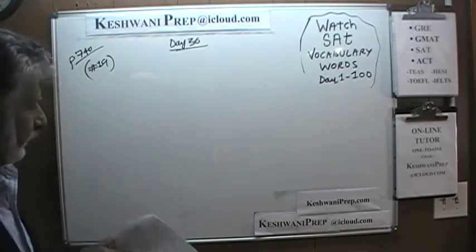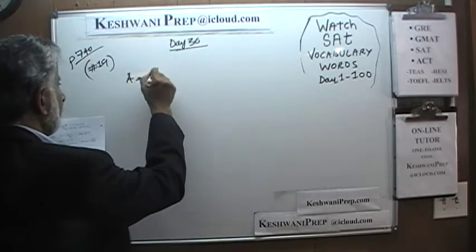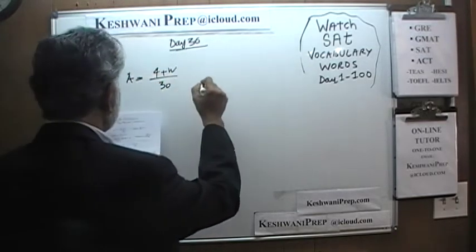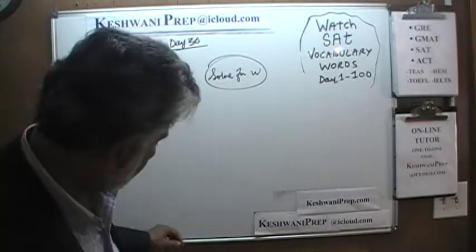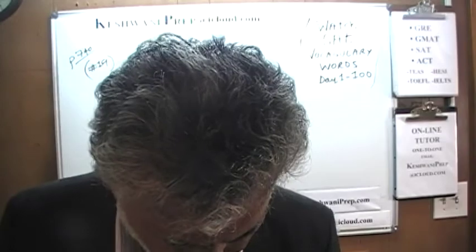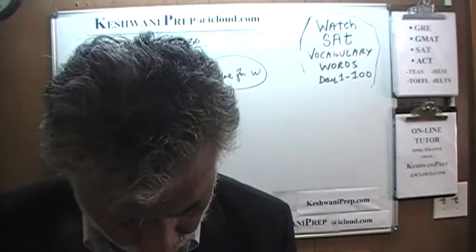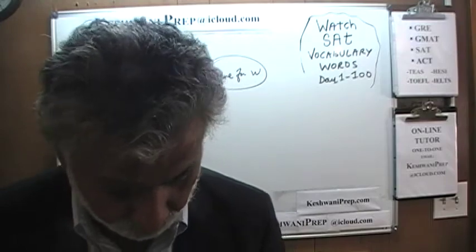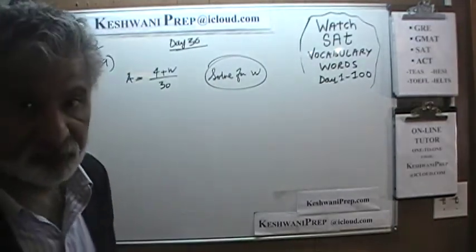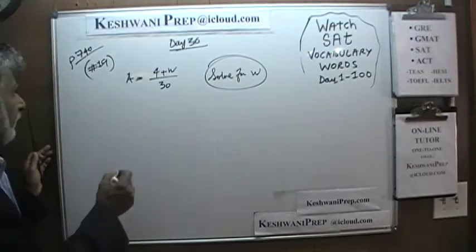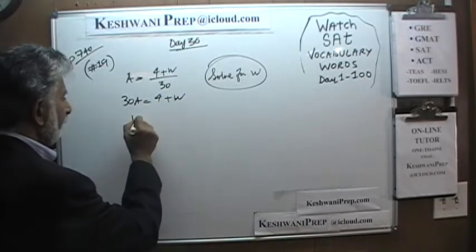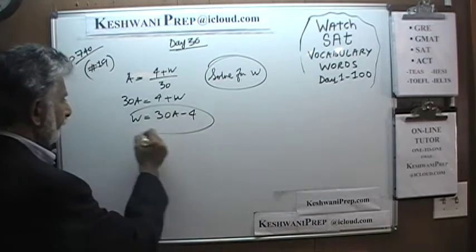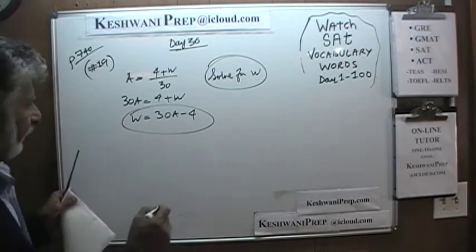Let's take a look at number 19. We are told that A is equal to (4 plus W) over 30. We are simply asked to solve for W. The current formula is the one on the bottom. Multiply both sides by 30 — we get 30A is equal to 4 plus W. Therefore W is simply 30A minus 4. It couldn't be any simpler than that. And that's answer choice A.